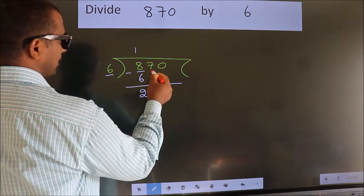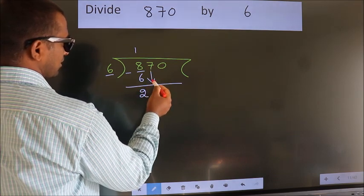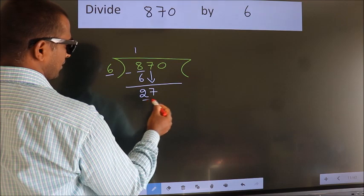After this, bring down the beside number. So, 7 down. So, 27.